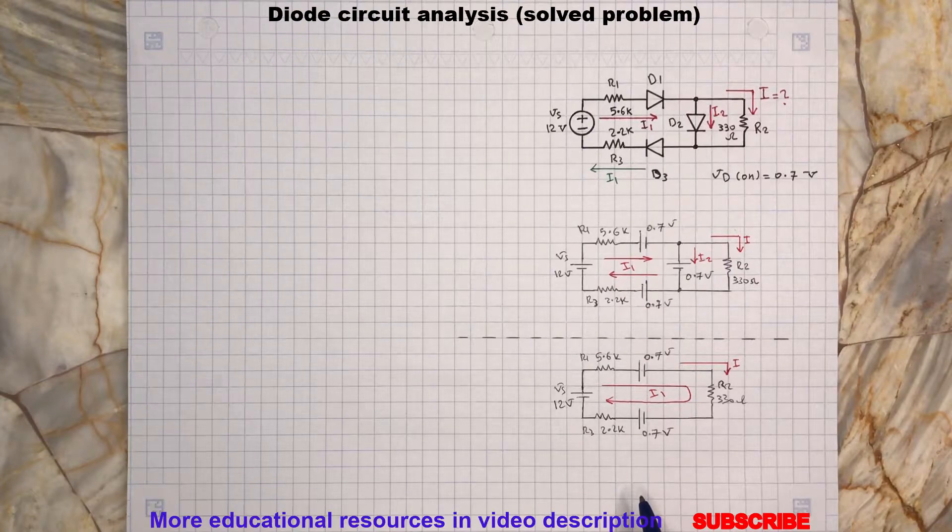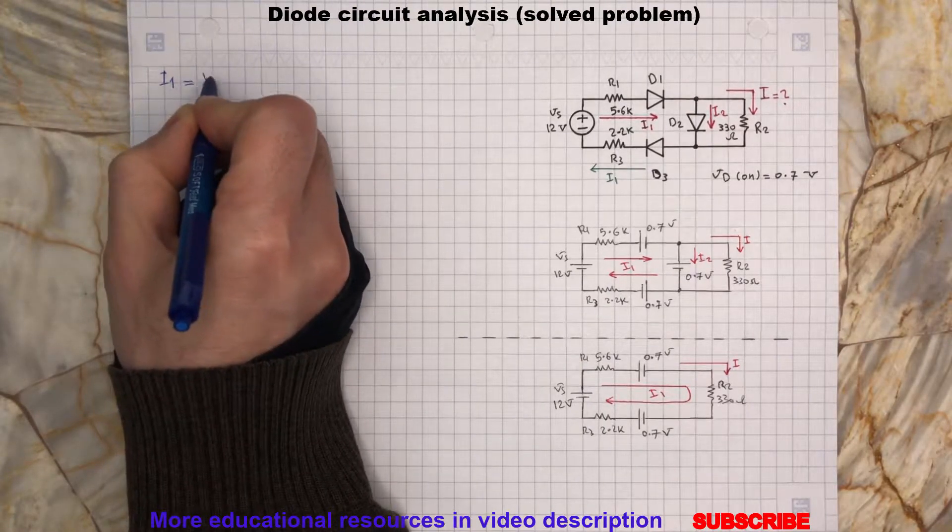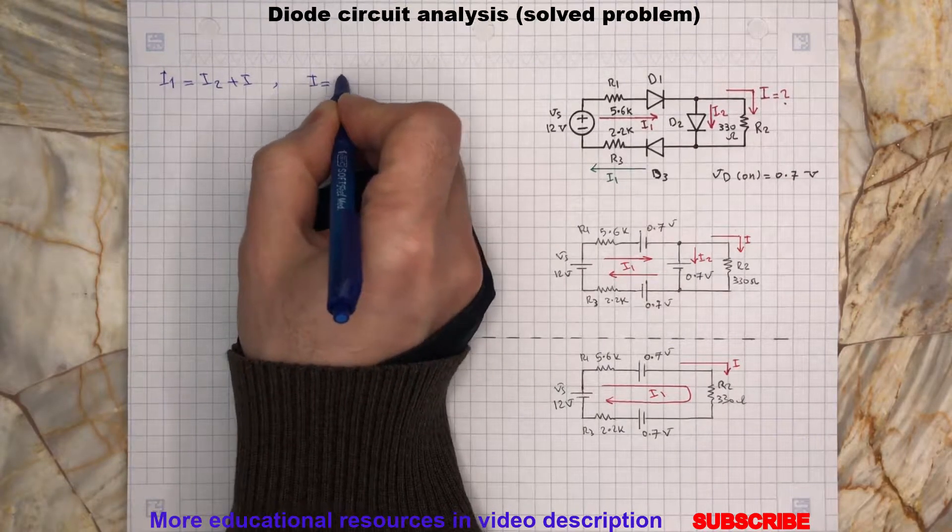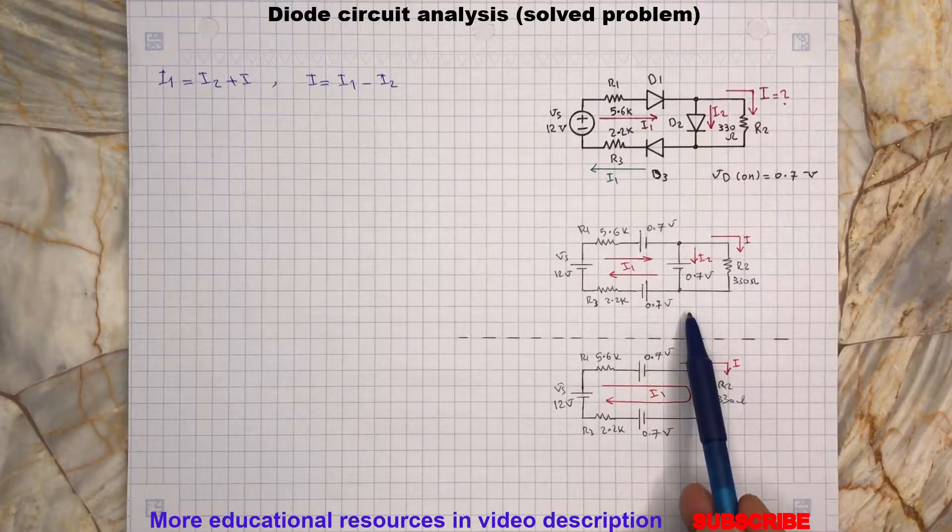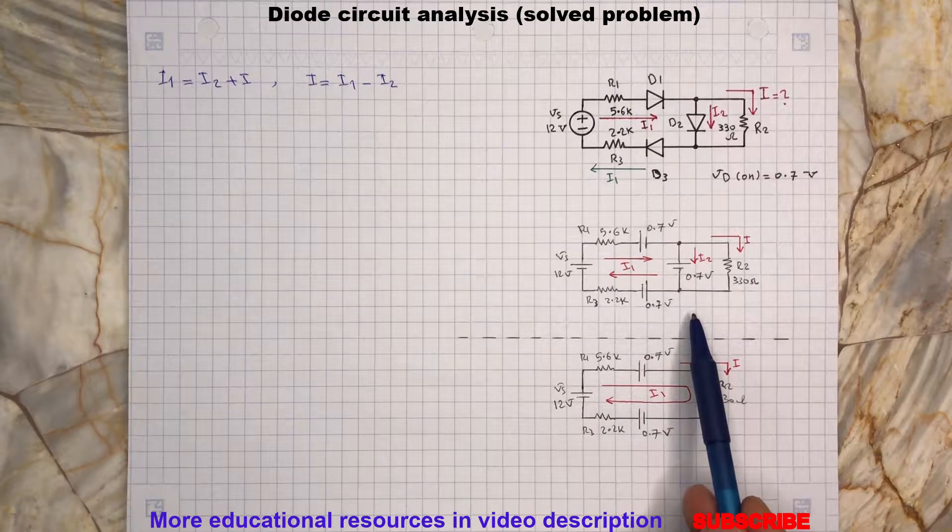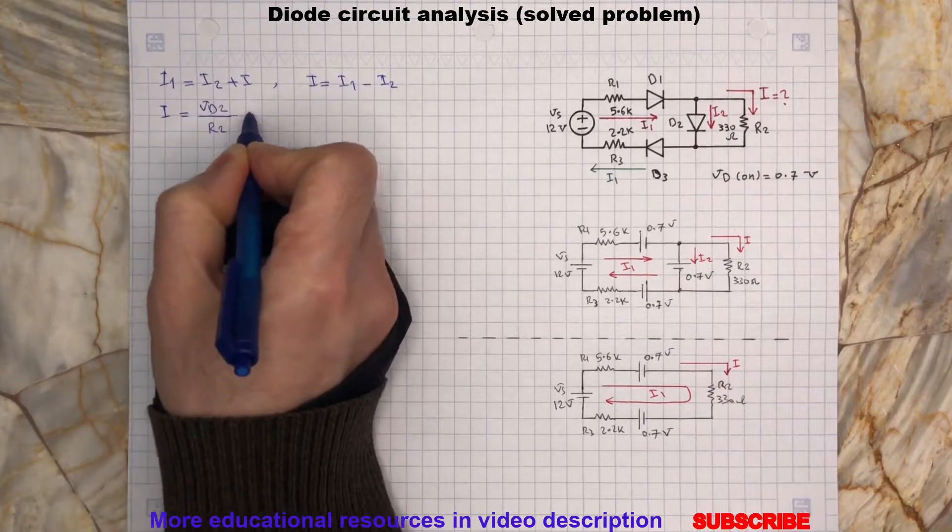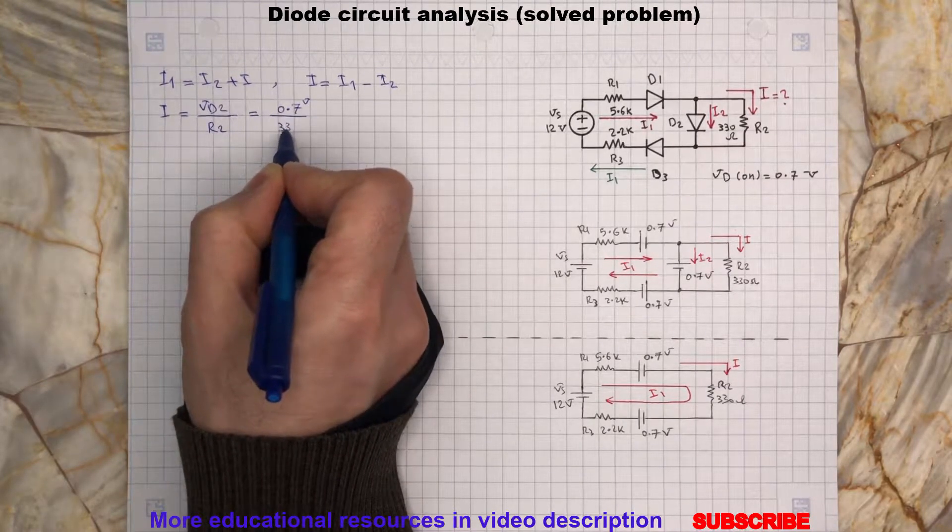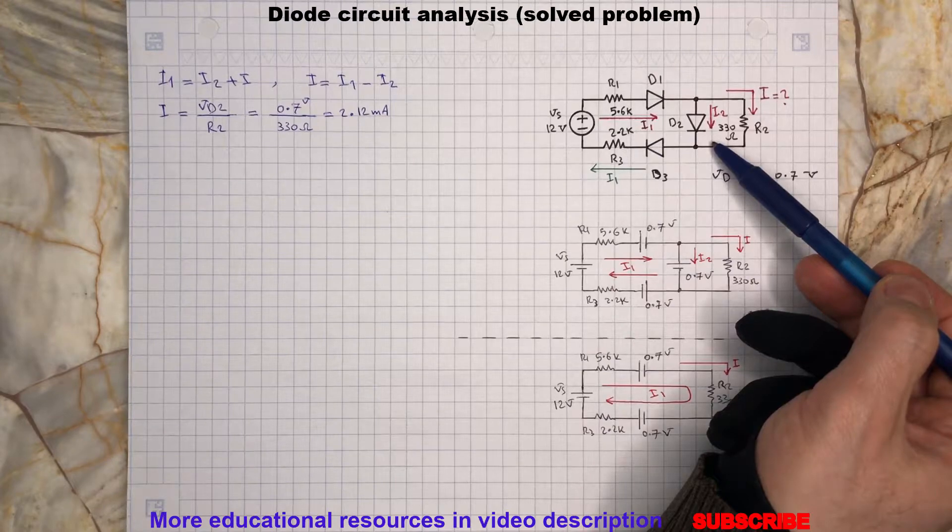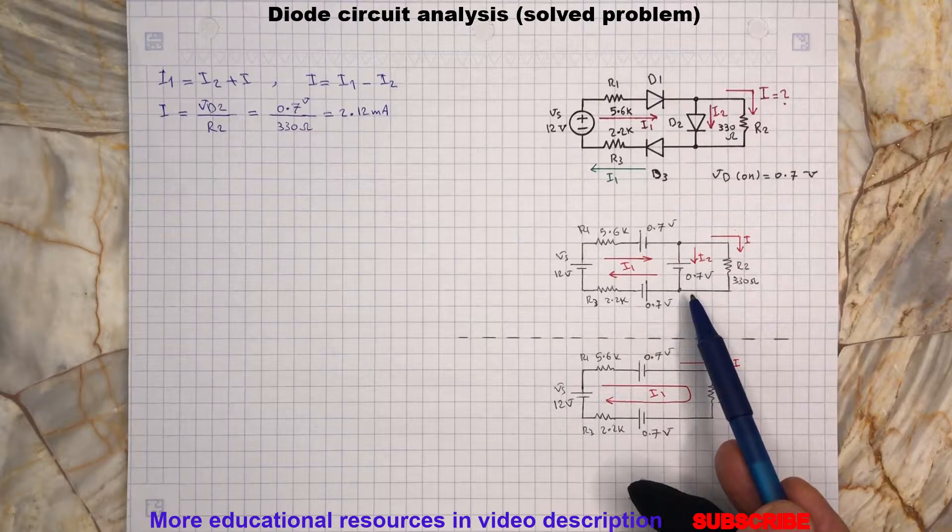So let's write Kirchhoff's current law KCL. Per our assumption, since we assume that all the diodes are on and D2 and R2 are in parallel, then we can write. Now we need to prove that D2 is on because we assumed 0.7 volts would be across D2 and R2.